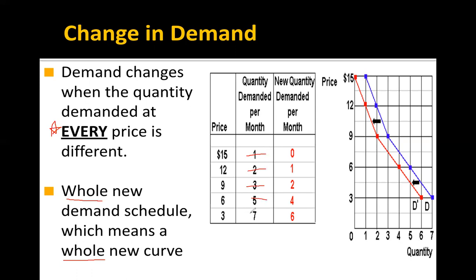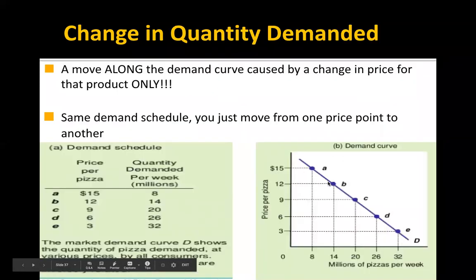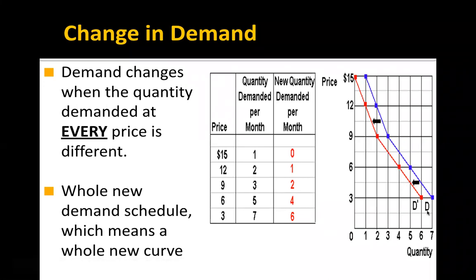This old curve is no longer valid — this is your new curve. The most critical thing to understand is the difference between change in quantity demanded and change in demand. Change in quantity demanded: same curve, different points. Change in demand: every point gets a new quantity demanded — a whole new curve.